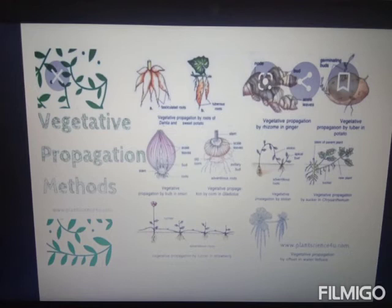Gemmules are small groups of cells enclosed by a protective coat, formed in sponges. Gemmules contain totipotent cells known as archaeocytes. On liberation from the gemmules, these archaeocytes form new sponges. An example is Spongilla.